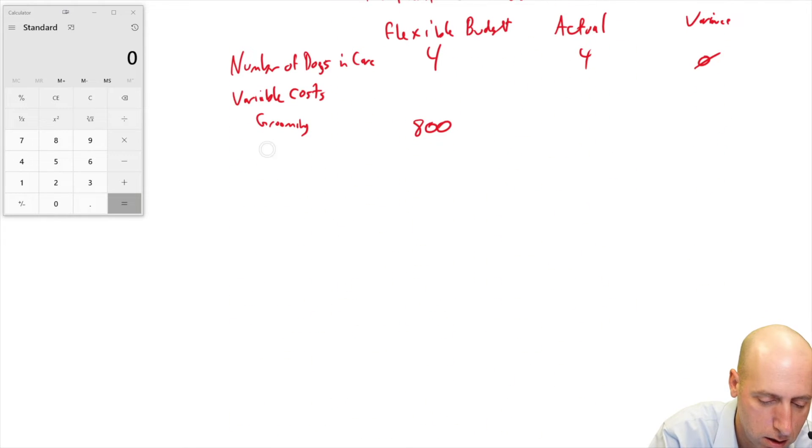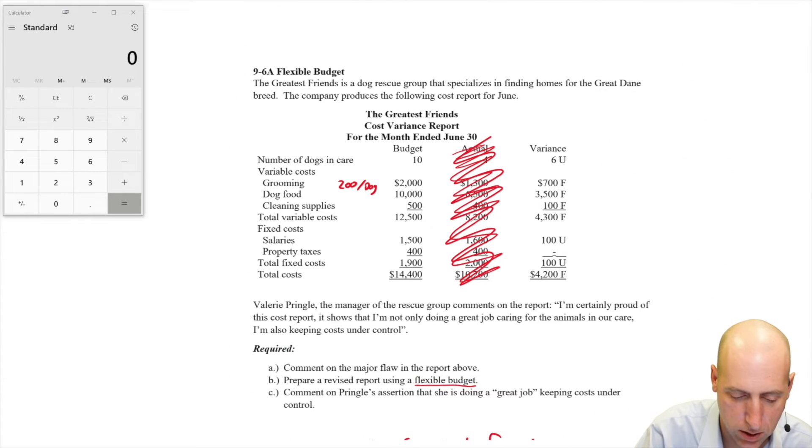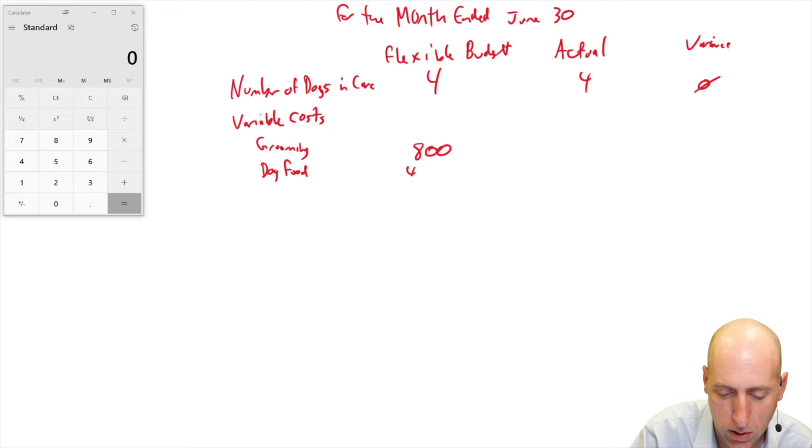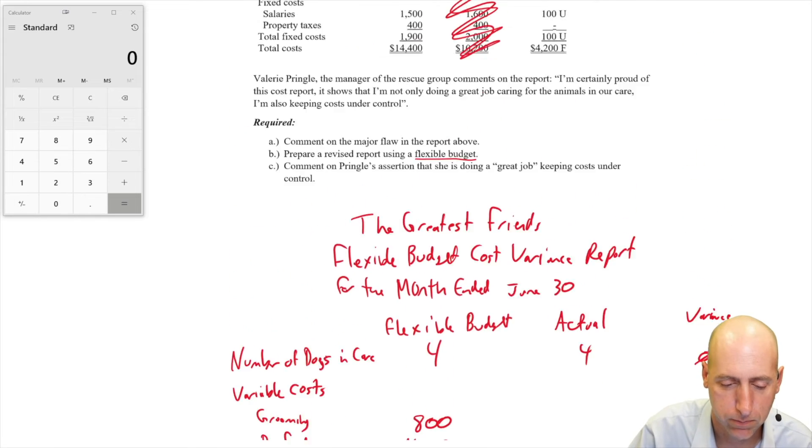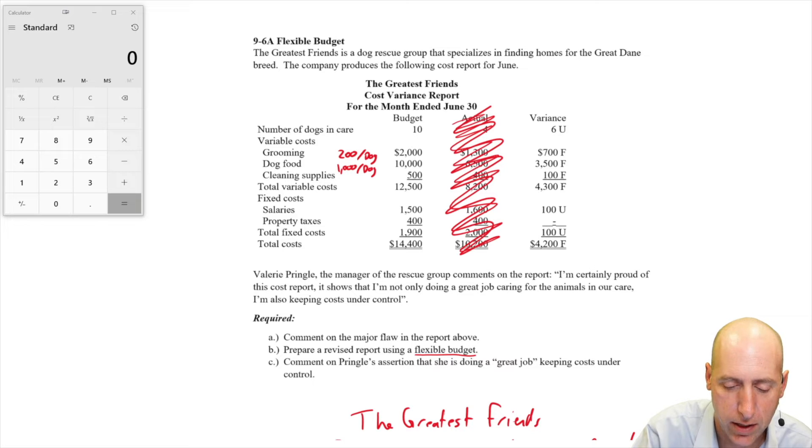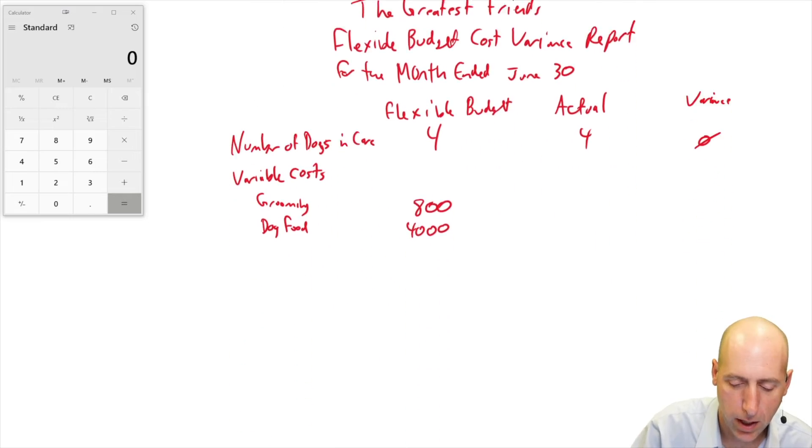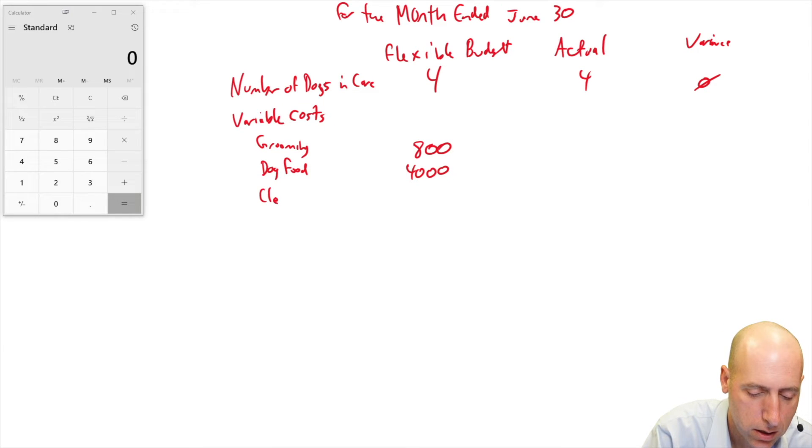Dog food cost. The dog food cost is $10,000 for 10 dogs. Great Danes eat a lot. So that's $1,000 per dog. Now in this scenario, we only have four dogs. So we should only be spending $4,000 on dog food. Cleaning supplies, $500 for 10 dogs. That's $50 per dog. Cleaning supplies based on four dogs are $200. That was $50 per dog. So our total variable costs, $800 plus $200 plus $4,000 are $5,000.